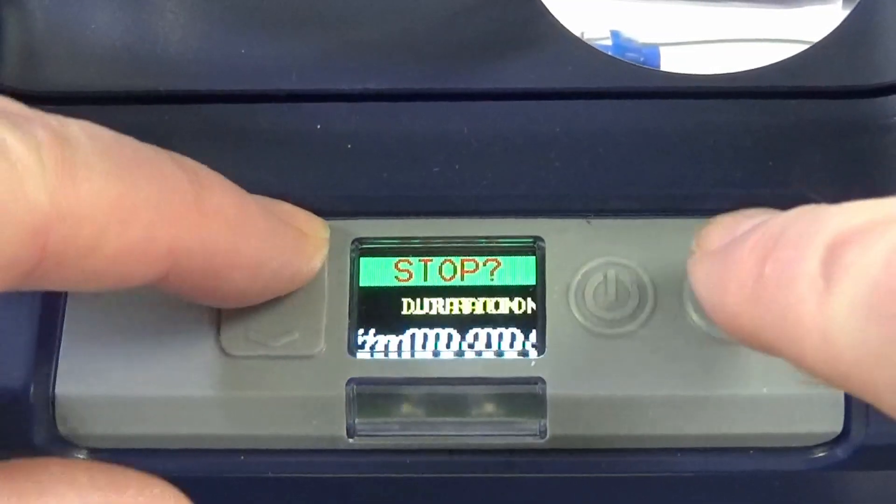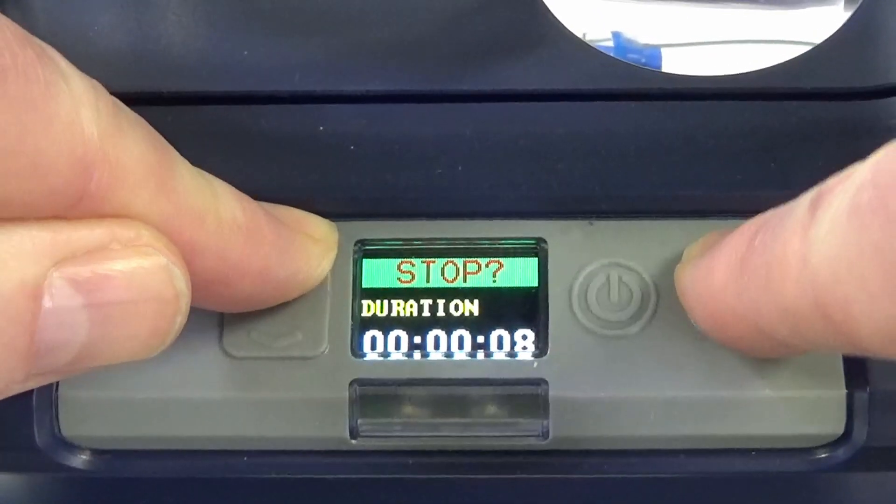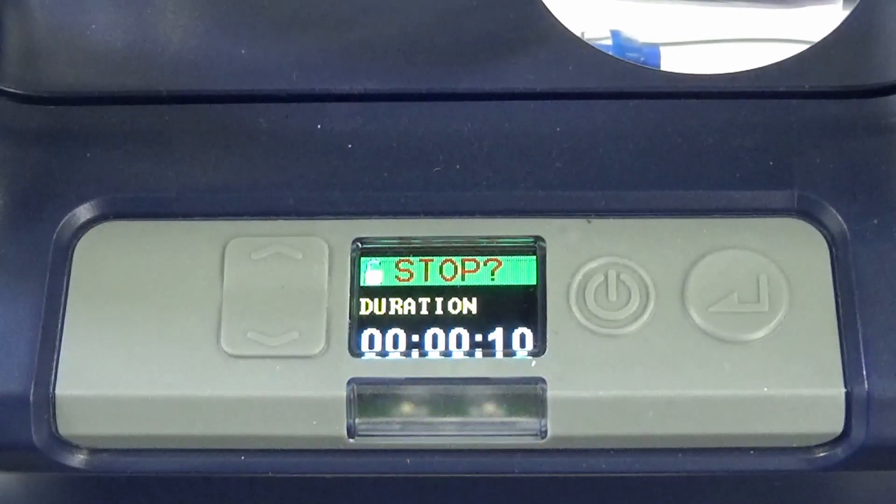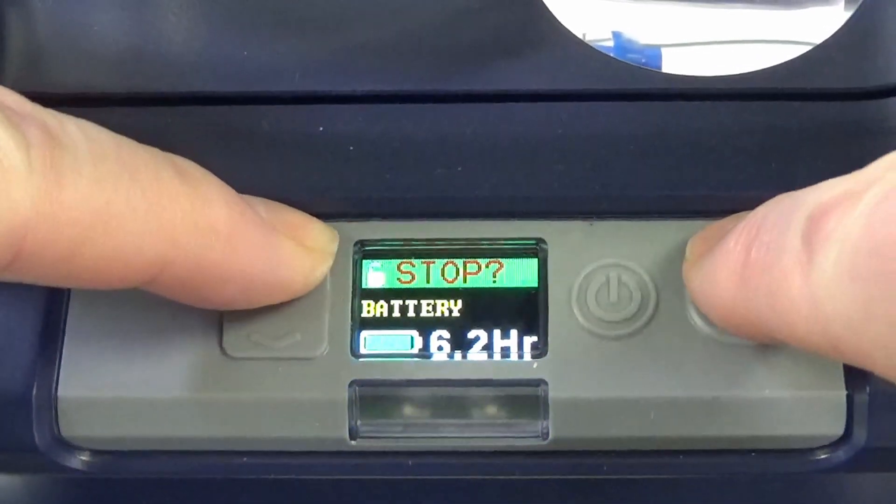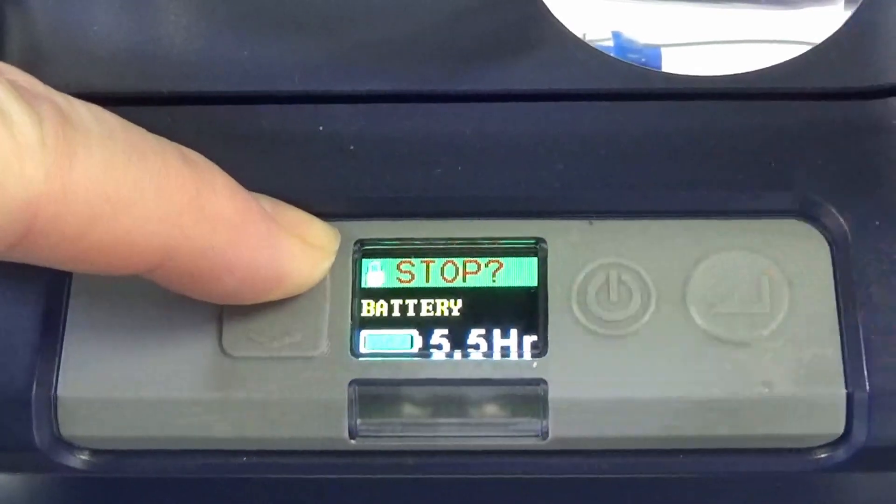If the pump is going to be left unattended, then the keypad can be locked to prevent tampering. To lock the pump, hold the up cursor and tap the enter key 6 times.